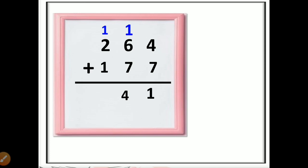Finally we add the hundreds place. The numbers in the hundreds place are 2, 1, and carry 1. Two plus one plus one equals 4. This 4 comes here, so our final answer is 441.